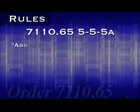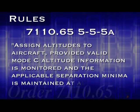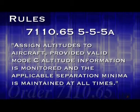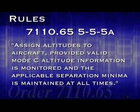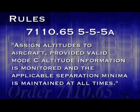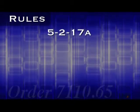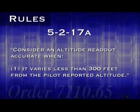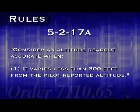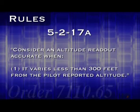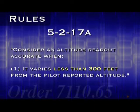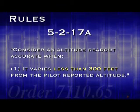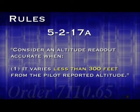Paragraph 5A discusses the basic prerequisite for using this kind of separation. It says: assign altitudes to aircraft provided valid Mode C altitude information is monitored and the applicable separation minima is maintained at all times. In order to apply Mode C altitude separation, the aircraft in question must be sending valid Mode C data. Mode C information is considered accurate when it varies less than 300 feet from the pilot reported altitude. If it varies by 299 feet it's valid, but if it varies by 300 or even 301 feet, it cannot be used.